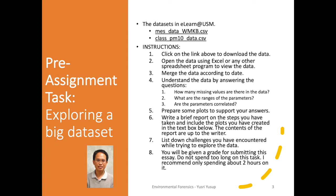The second question is: what are the ranges of the parameters? For example, for temperature — what is the minimum, maximum, and average temperature? That applies to each parameter. The third question is: are the parameters correlated? For example, can you find a correlation between temperature and PM10 concentration?